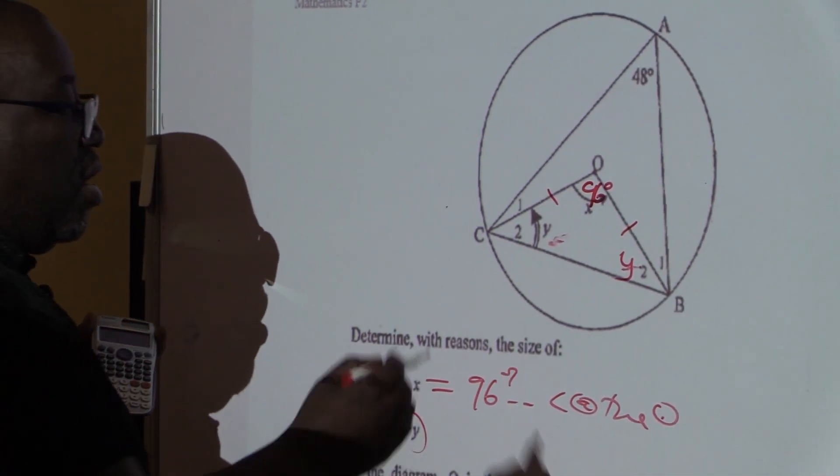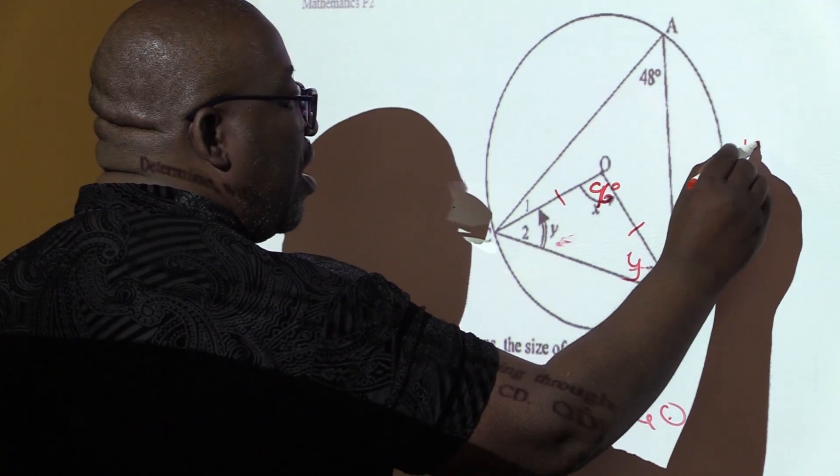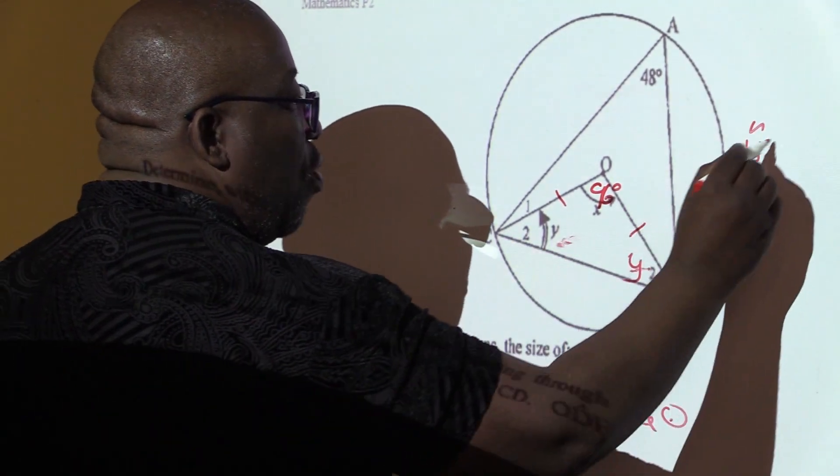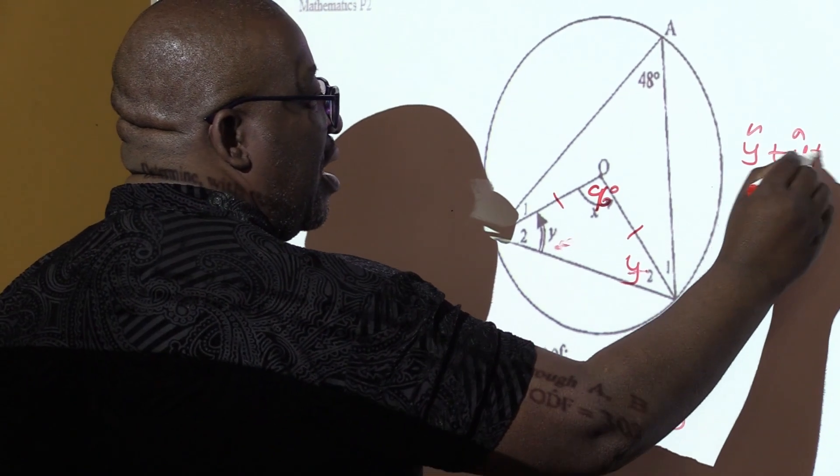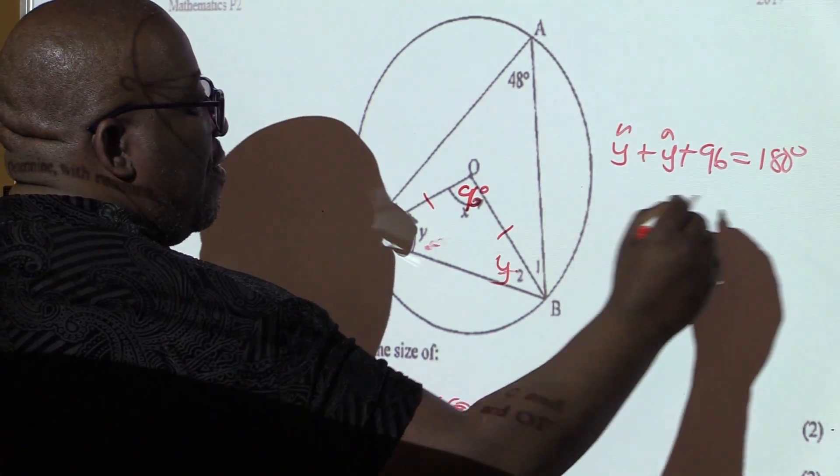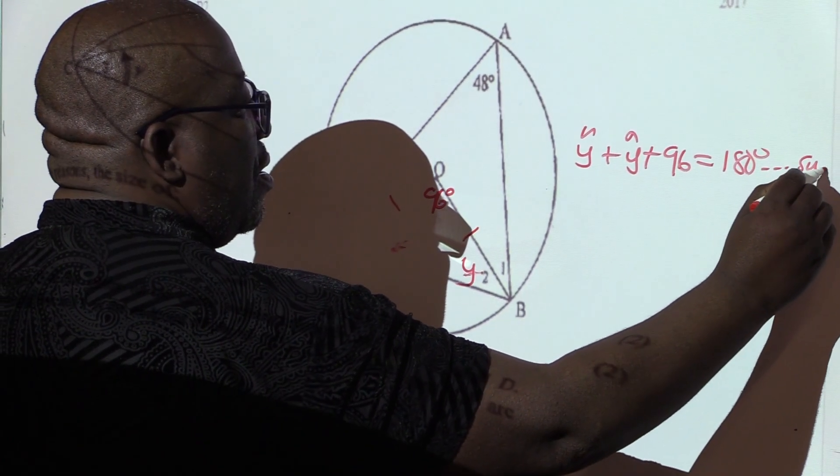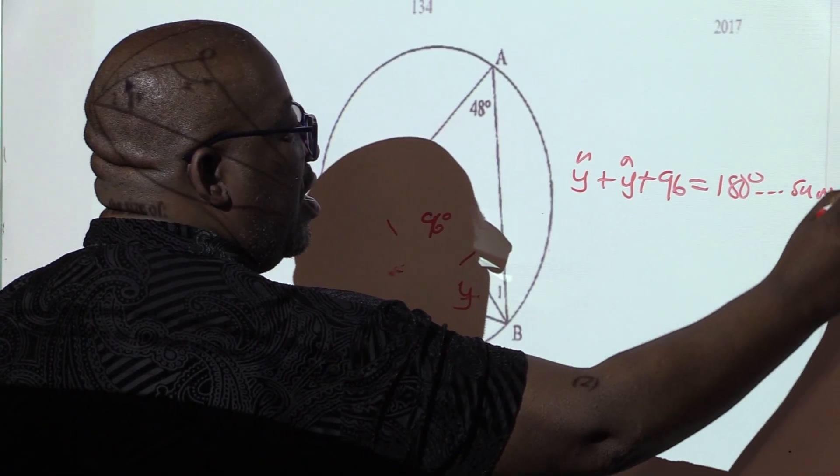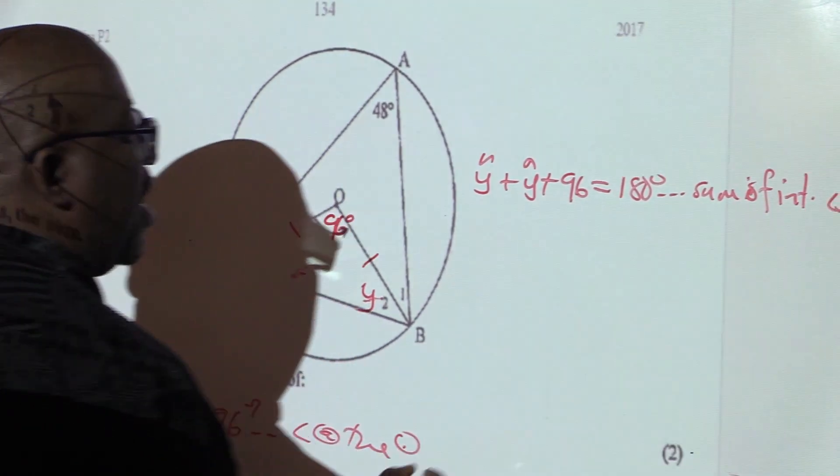How do I find angle Y? We know that angle Y plus this angle Y plus 96 is equal to 180 degrees, sum of interior angles of a triangle.